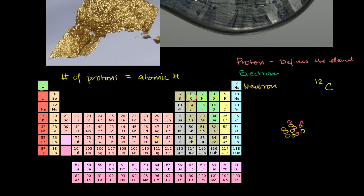Sometimes it will be written like this — they'll actually write the number of protons as well. The reason we write 'carbon-12' is that 12 represents the total number of protons and neutrons inside the nucleus. This carbon has an atomic number of six.